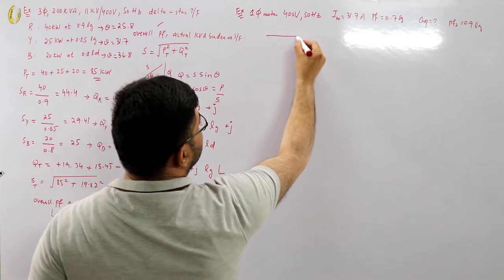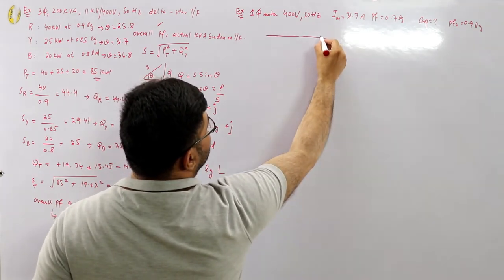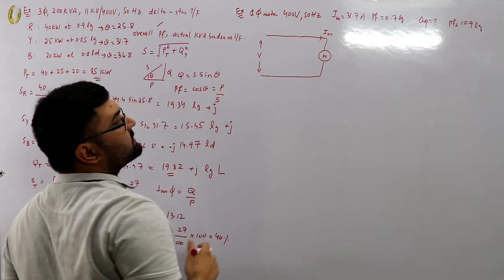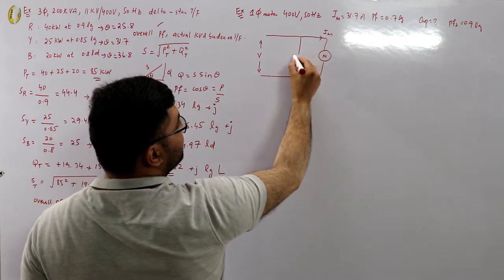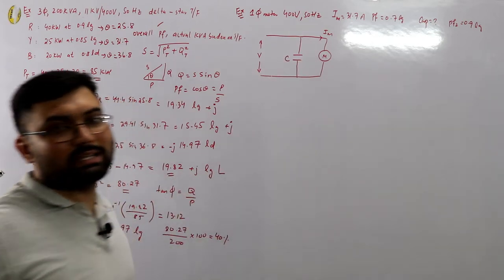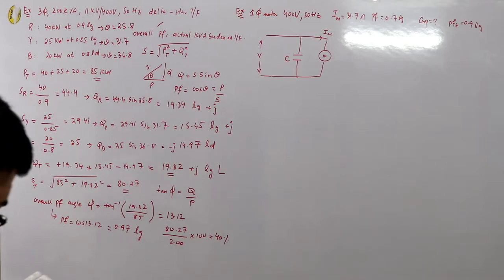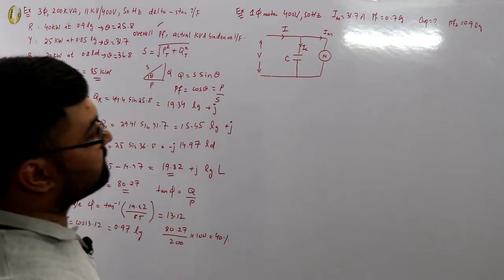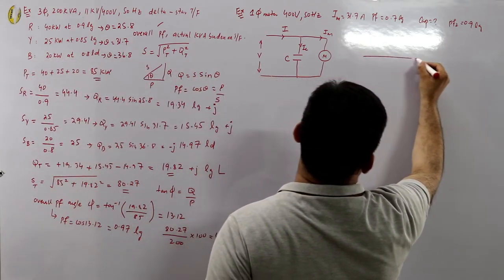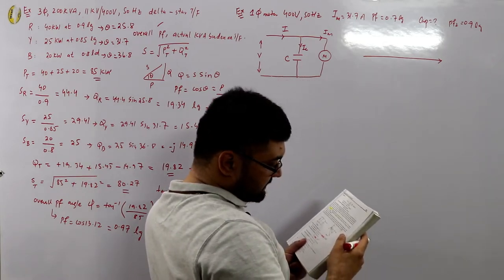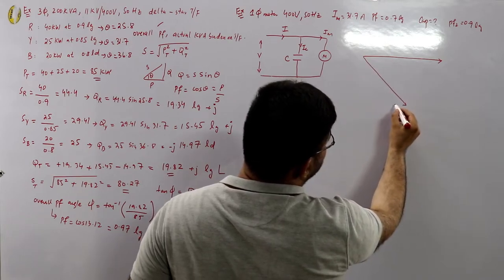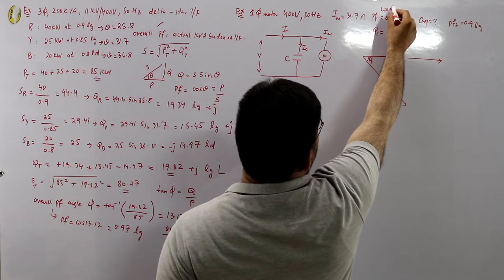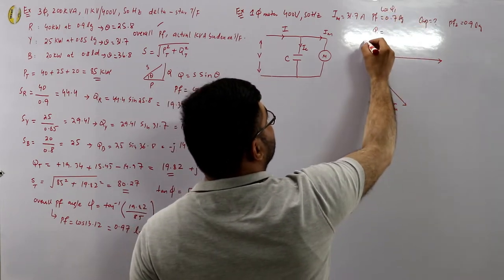Drawing the circuit: the motor carries current I_m, connected across 400V at 50 Hz. A capacitor is installed in parallel, with capacitor current I_c. The total supply current is I = I_m + I_c. In the phasor diagram, the motor current I_m lags the voltage by θ₁ = cos⁻¹(0.7), and the new total current I lags by φ₂ = cos⁻¹(0.9).